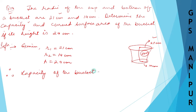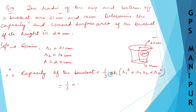The capacity of the bucket is given by the volume formula: Volume = (1/3) × π × h × (r1² + r1·r2 + r2²). Please write down and remember this formula. Here π = 22/7, and height h = 24 centimeters.